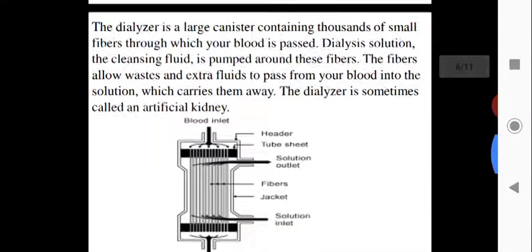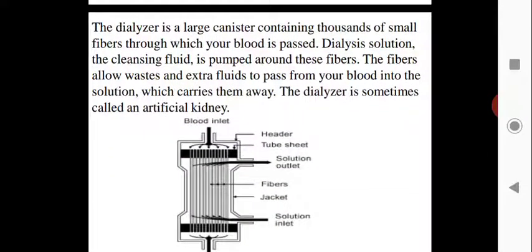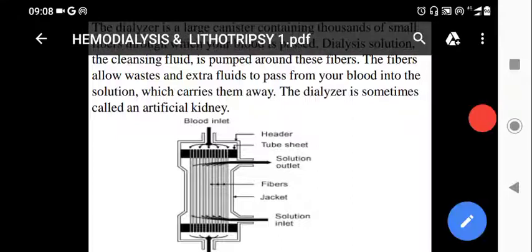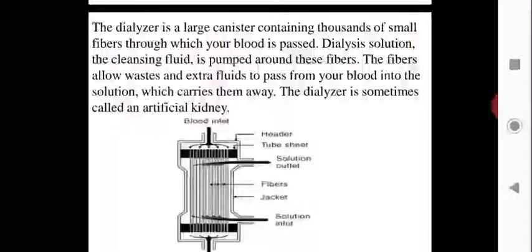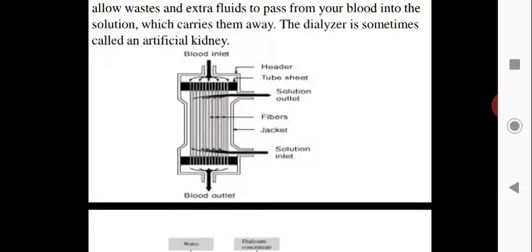The dialyser is a large canister containing thousands of small fibers through which your blood is passed. The dialysis solution — the cleansing fluid — is pumped around these fibers. The fibers allow waste and extra fluid to pass from your blood into the solution, which carries them away. The dialyser is sometimes called an artificial kidney.